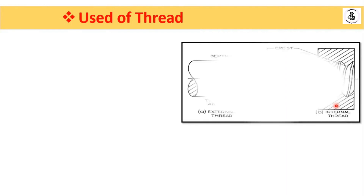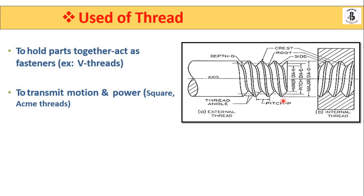Threads have different kinds of uses. Their primary application is to hold parts together, acting as fasteners, for which V-type threads are used. Various types of threads are available: V threads, square threads, acme threads, Whitworth threads, metric threads, and many more. For fastening applications, V threads are used, while for motion transfer or power transmission, square threads or acme threads are preferred, depending on the application requirement.